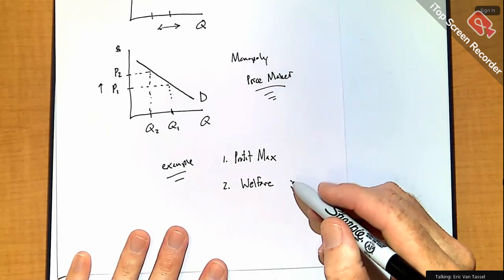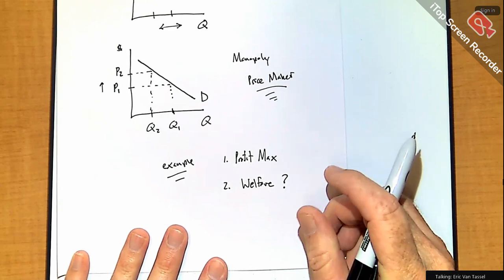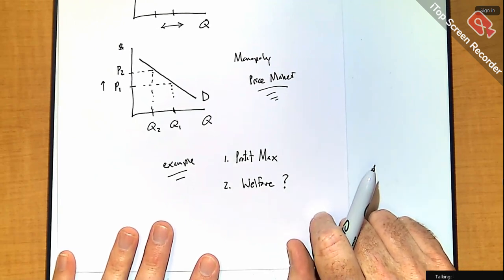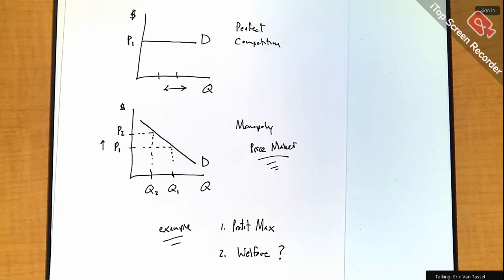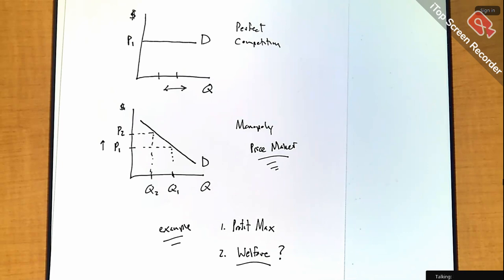We want to look at the question: how come everybody hates monopolies? What's wrong with the monopolist? Usually people just say they charge a super high price, but it's more than that. The high price doesn't bother economists. What bothers economists about a monopoly running the market? For example, FPL — Florida Power and Light — they're a monopoly. If you want to buy electricity, that's your only option. SpaceX is also arguably a monopoly.